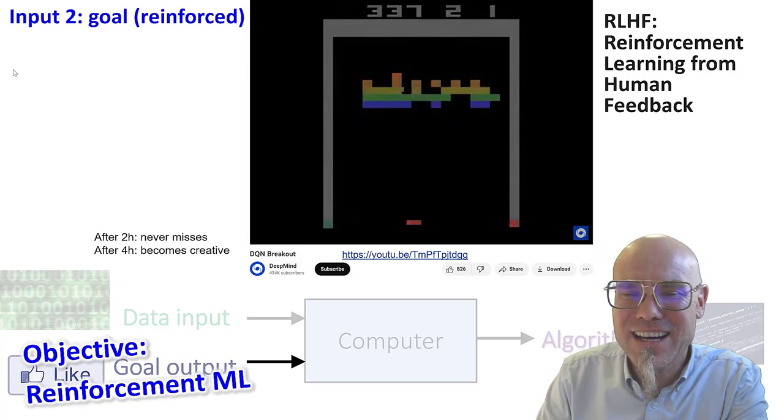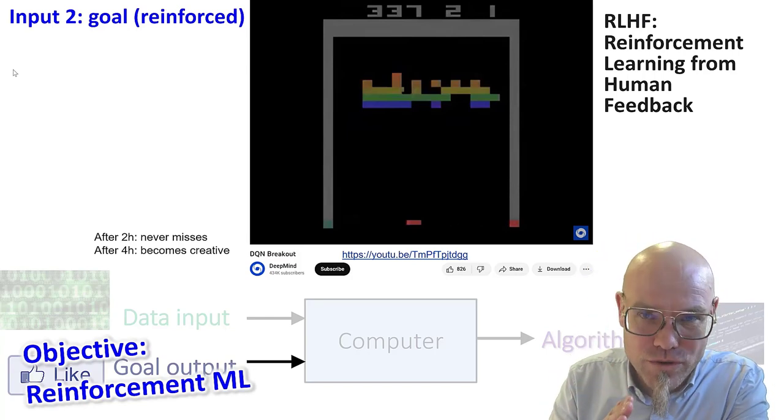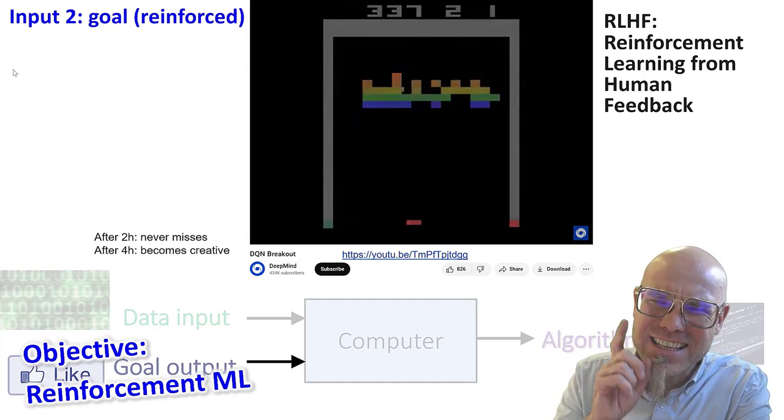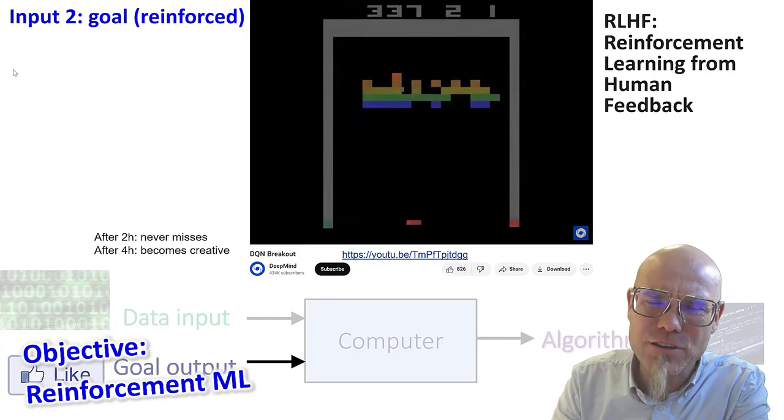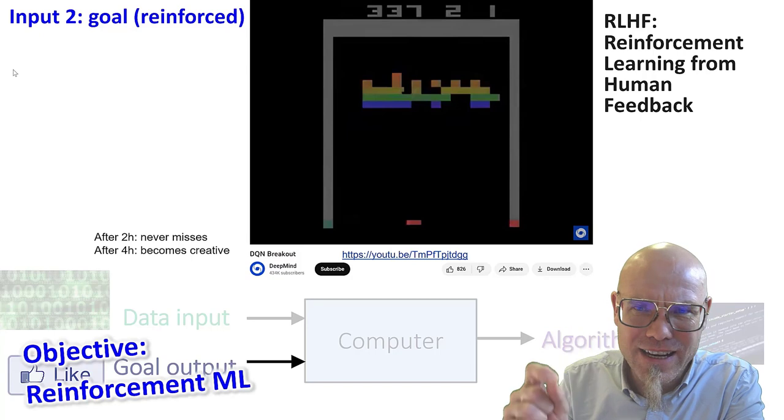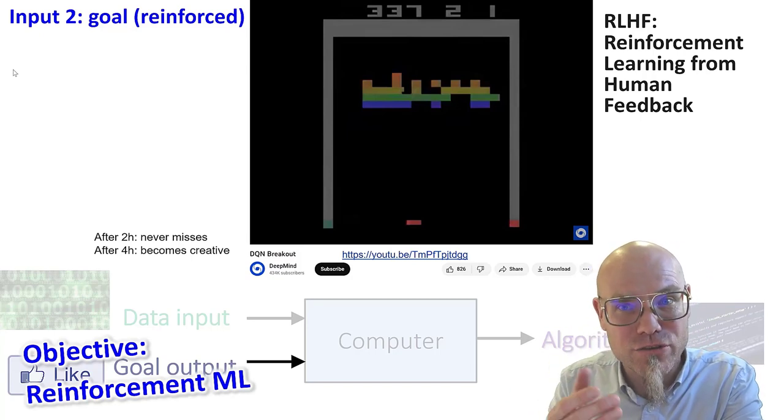So RLHF is then when we fine tune the reinforcement learning, when we say, good, you made this point, but now, you know what, this tunneling trick is not prohibited, or it's only prohibited, like, you know, once in an hour or something like that, you kind of like, you fine tune it.